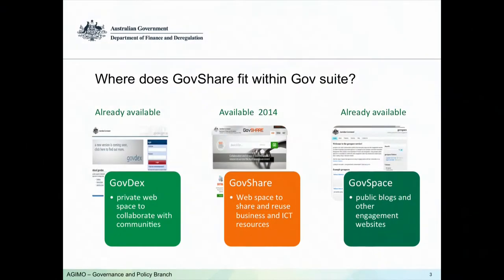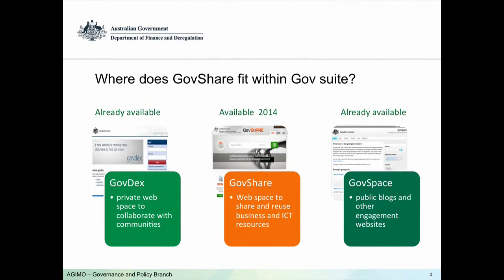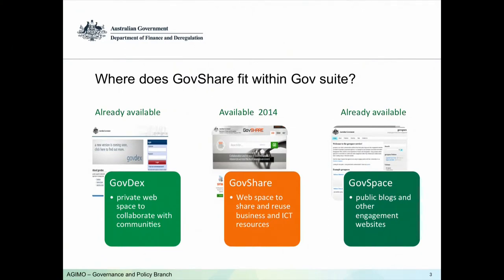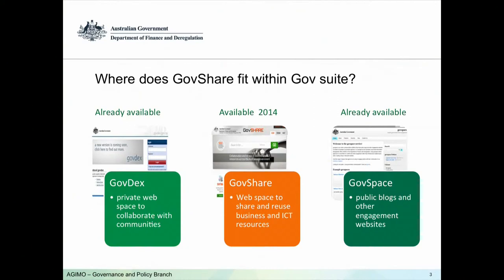So where does GovShare fit within the GovSuite? Already available we have GovDex, which supports collaboration across government — it is a secure private web space that helps government agencies manage projects and share documents and information. Also available is GovSpace, which allows agencies to concentrate on content and online engagement rather than infrastructure issues when creating a blog or interactive websites. And now available in 2014 we have GovShare, which supports collaboration and reuse of business and ICT resources across the Australian government.